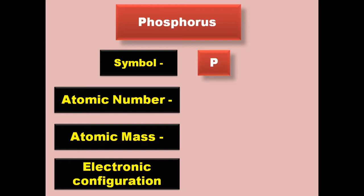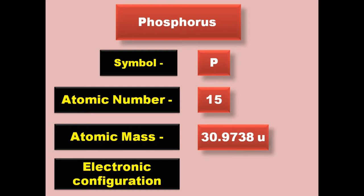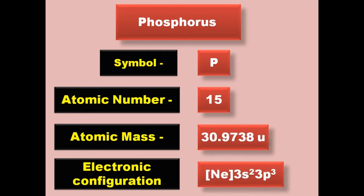Phosphorus has symbol P, atomic number 15, atomic mass 30.9738, electronic configuration [Ne] 3s2 3p3. Phosphorus is a non-metal and exists in solid form at room temperature.